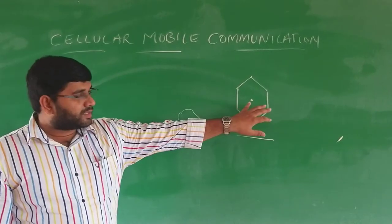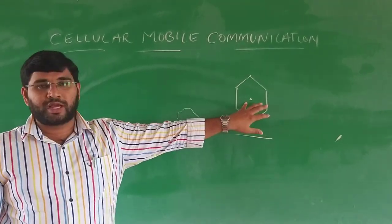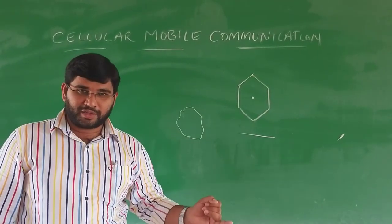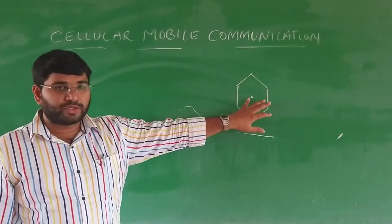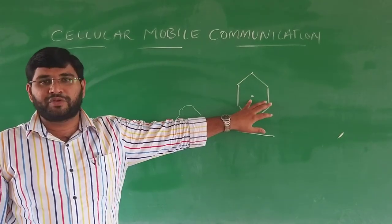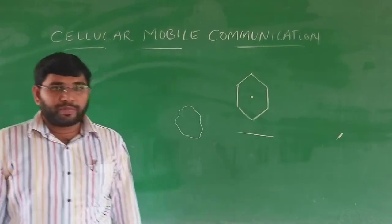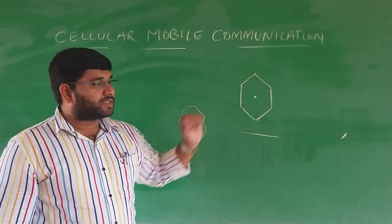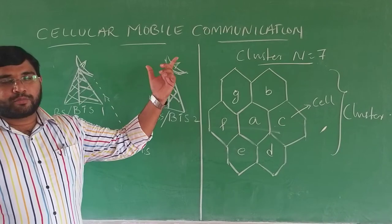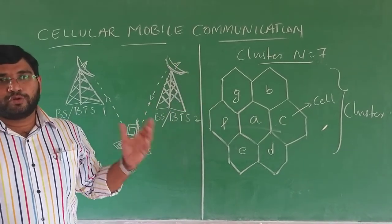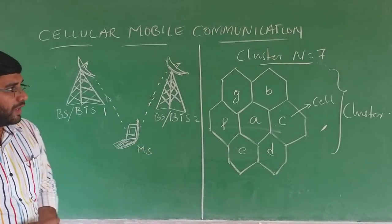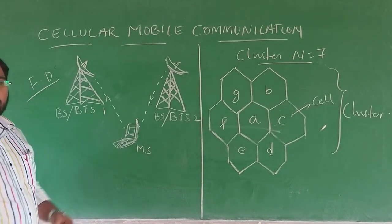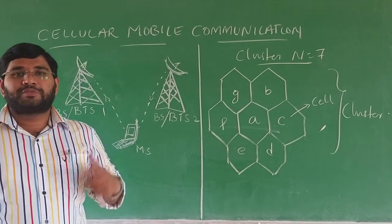The base transceiver station is a device used for transmitting and receiving of information. Cellular mobile communication comes under full duplex communication, meaning transmission and receiving are done at the same time.